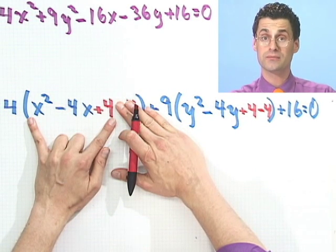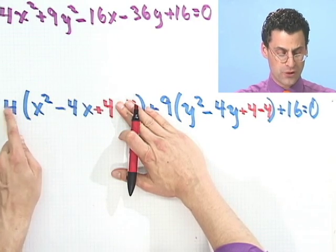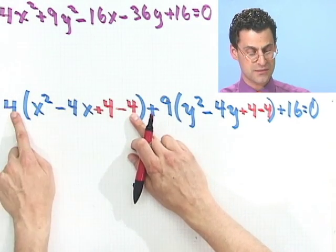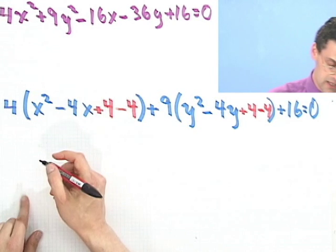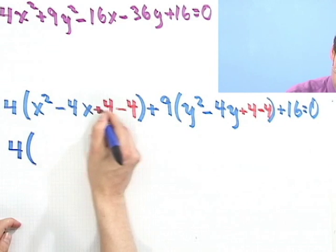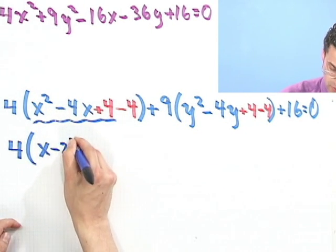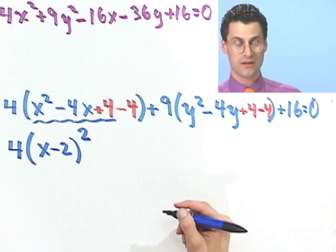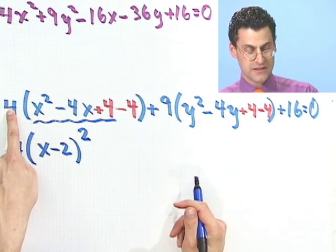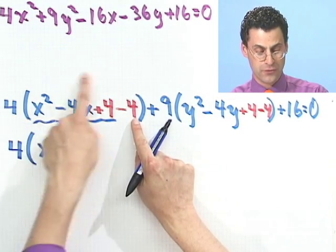Now what's the point of this? The point of this is that this term right there now can be factored - it's (x - 2)² - so I've got that going for me. But now I also have a 4, don't forget to distribute the 4 times this minus 4. And so what I see here is 4 times (x - 2)² - I completed the square - but don't forget that this 4 has to hit that minus 4, so I see a minus 16.